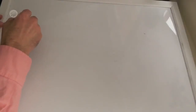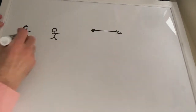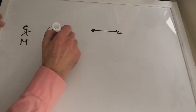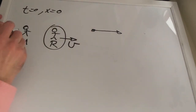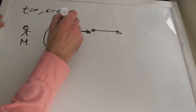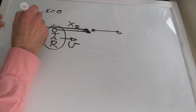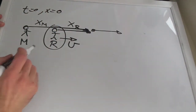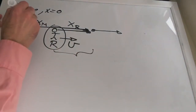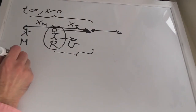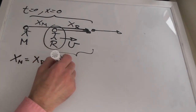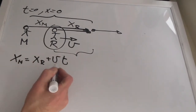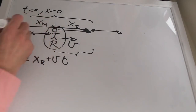Consider two observers, Robert and Maggie, in relative motion with relative velocity v, observing the same particle. We set initial conditions so that at time t equals zero they are both at x equals zero, and Robert moves along the positive x-axis with velocity v. Robert measures position x_r and Maggie measures x_m. Because Robert is moving away from Maggie and towards the particle, the relation between positions is: x_m = x_r + vt. The position measured by Maggie equals the position measured by Robert plus the distance traveled by Robert towards the particle.